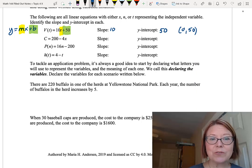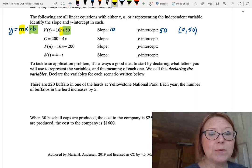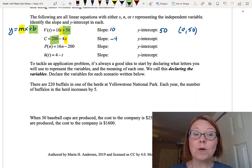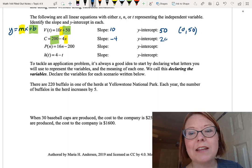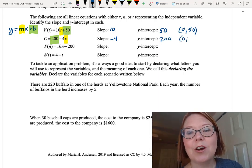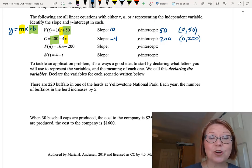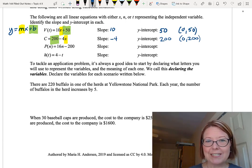The next equation is c equals 200 minus 4x. Again, the slope is going to be the number in front of the independent variable, in this case x, so our slope is negative 4, and then our y-intercept is the number that's separate from that, so 200 would be our y-intercept, or we could write that as 0, 200. I'd like you to pause this video and go ahead and try the next two, p of n equals 16n minus 200, and h of t equals 4 minus t. Pause it and come back to me when you're finished.